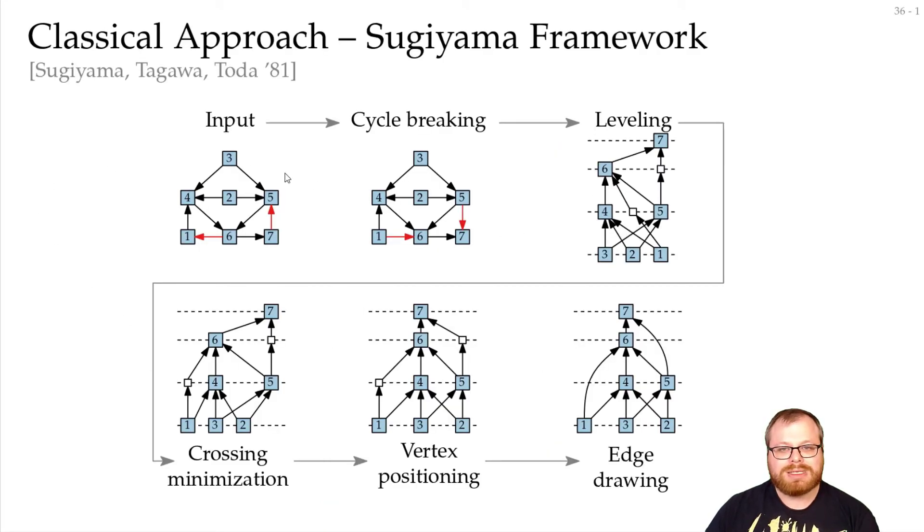And this is the whole Sugiyama framework. We first break the cycles, make the graph acyclic. Then we find an assignment of the vertices to the layers. For this layer assignment, we try to minimize the number of crossings. Then we try to position the vertices evenly on the layers to get as straight edges as possible. And then we draw them as Bézier graphs.